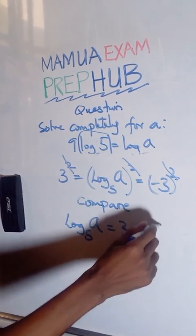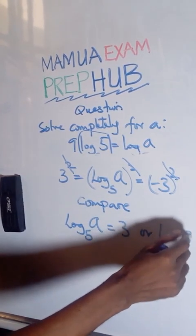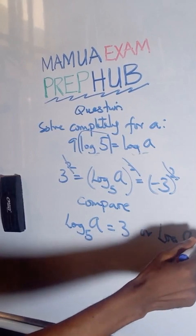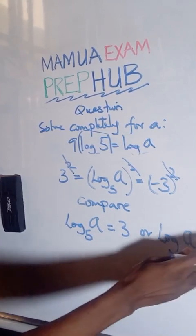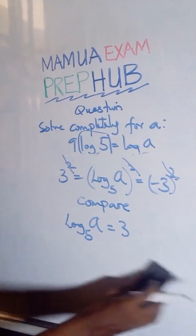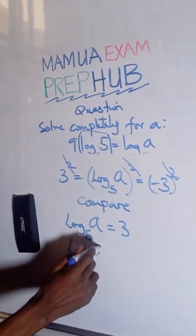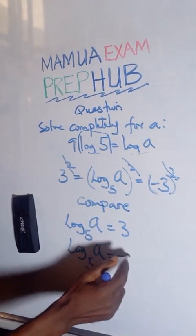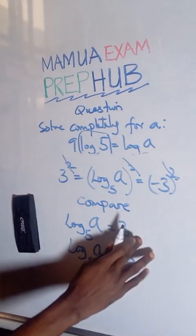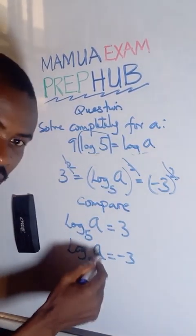So I see that log base 5 of a equals 3, or log base 5 of a equals minus 3. Now, from this, we are going to arrive at two answers.